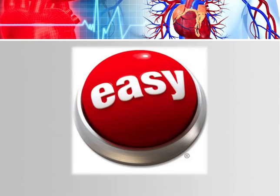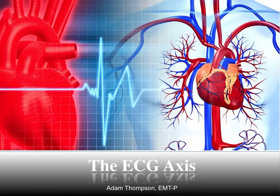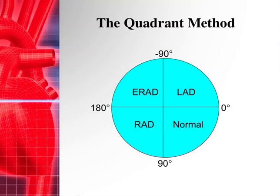Now we're going to make it easier — I promised you it gets easier. Here is the quadrant method. This is a much easier way of doing this. Take a look at this picture. We have all the different possible quadrants: normal, left axis deviation, extreme right axis deviation, and right axis deviation, separated into four simple quadrants.